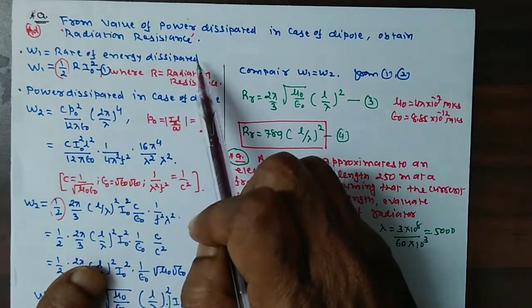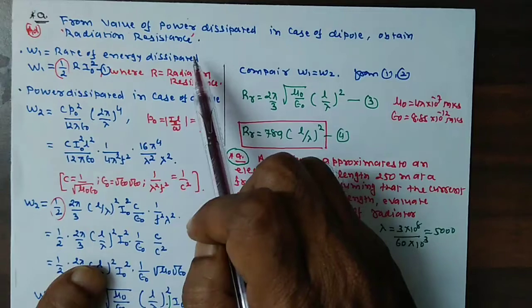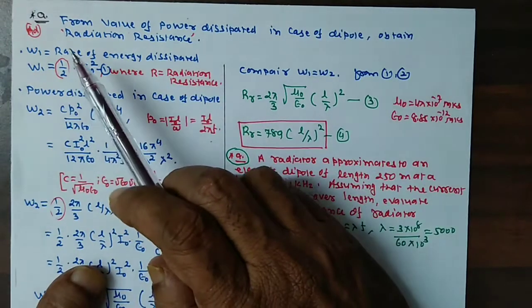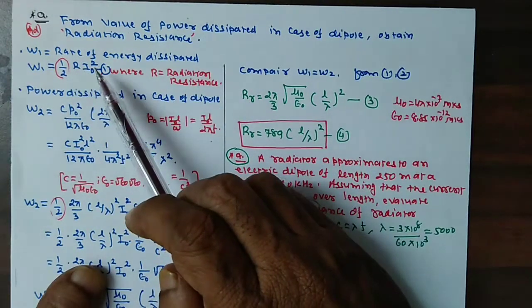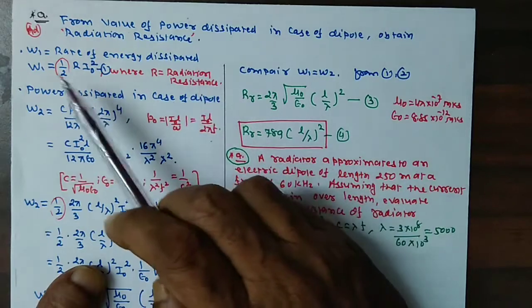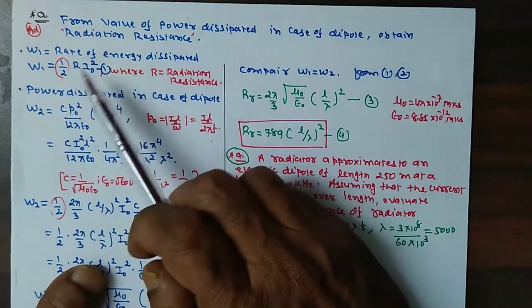W1 is the rate of energy dissipated. This is a general formula: W equal to one half R I0 square, where R is called radiation resistance of a device.